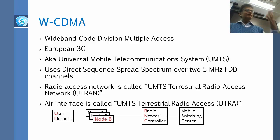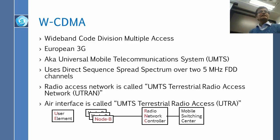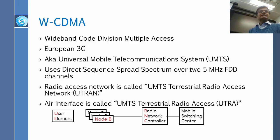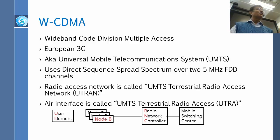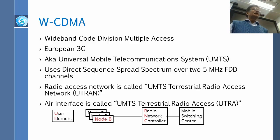They changed the names of everything. The user, which was called Mobile Station or MS before, is now called User Equipment — UE. The base station, which was called BTS, is now called Node B — B is for base station. The Radio Network Controller name, luckily, they did not change. So now you will hear a lot about Node B and UE. When we say UE, it is the same thing as mobile station.